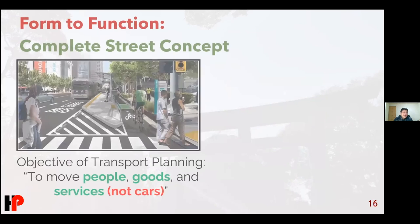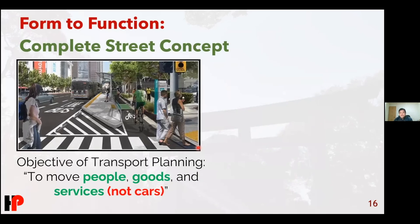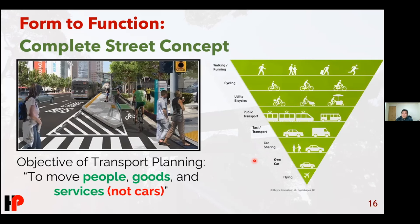As a transportation planner, this is one of my favorite slides: the complete street concept. It basically means that a street should allow multiple kinds of users. The objective of transport planning is to move people, goods, and services — not cars. We can move people and goods without cars by allowing them to bike, giving them walkable paths, and allowing public transportation. This is the hierarchy: these modes have very high environmental impact, these have very low environmental impact. What we should focus on in transportation planning is making our cities more of the low-impact modes and less of the high-impact ones.